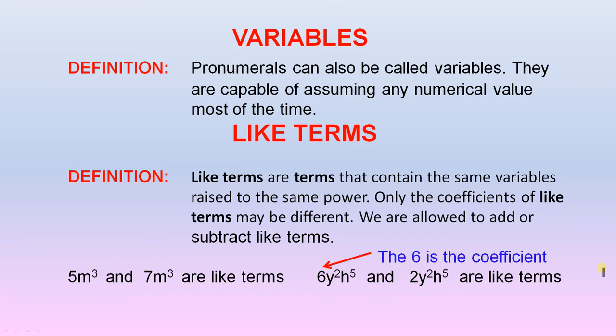Like terms. Definition. Like terms are terms that contain the same variables raised to the same power. Only the coefficients of like terms may be different. We are allowed to add or subtract like terms.